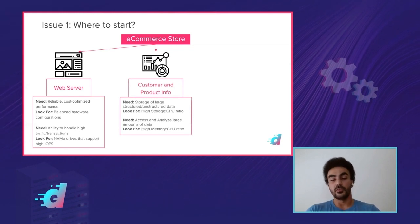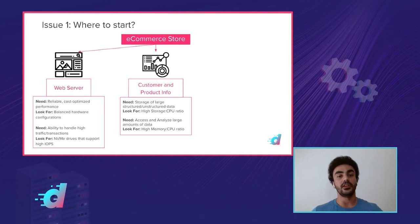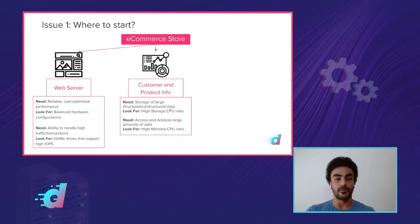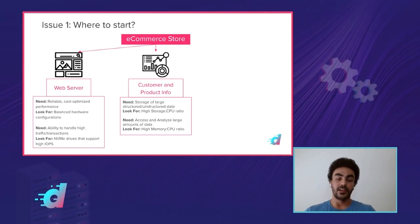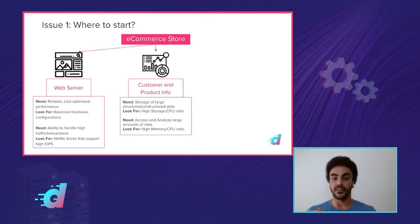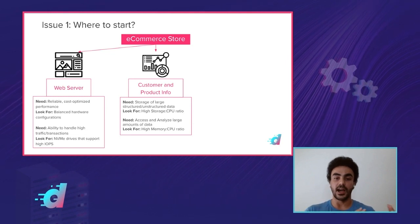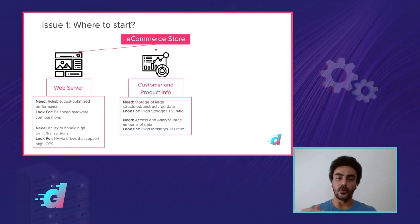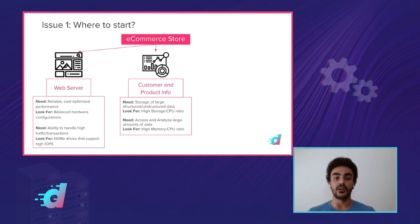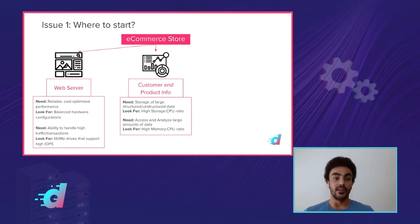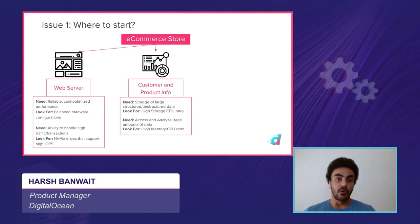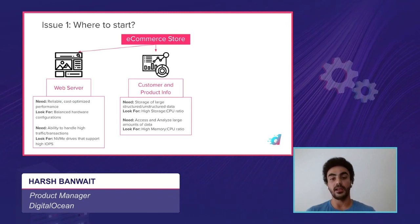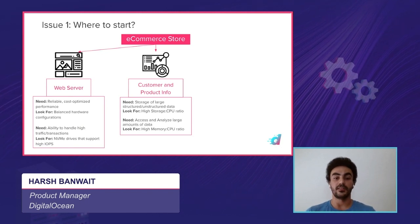Second is storing your customer and product info. Customers are setting up accounts, your products have pictures, details, and prices — there will be a large amount of data to store. This one's easy to understand: you want something with a high storage-to-CPU ratio, because you don't really want to spend more money on extra RAM or CPUs. Find something with a large amount of storage. One thing to note: if you're setting up a database for your customers, your VMs will become very memory hungry, so look at something with a high memory-to-CPU ratio when setting up a customer database.